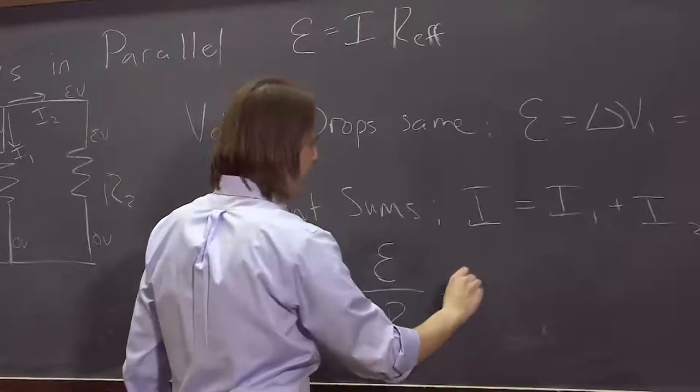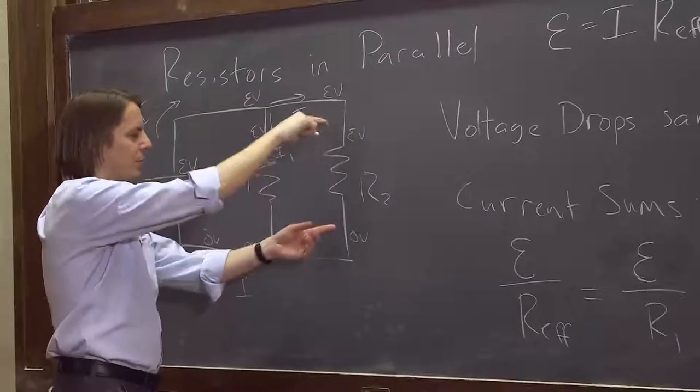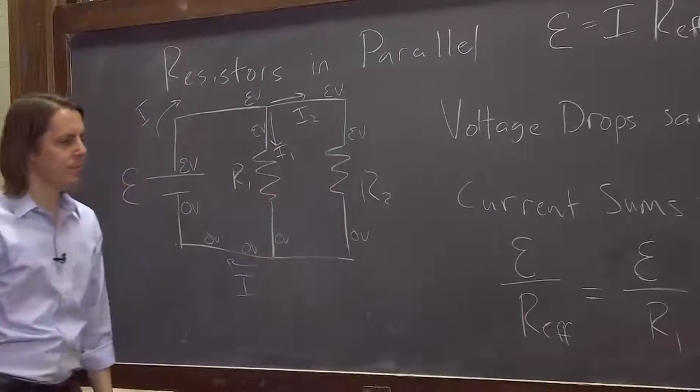I2, same argument. It's just the EMF over R2. Here's I2. It's what's flowing through R2. The EMF is E. So there you go.